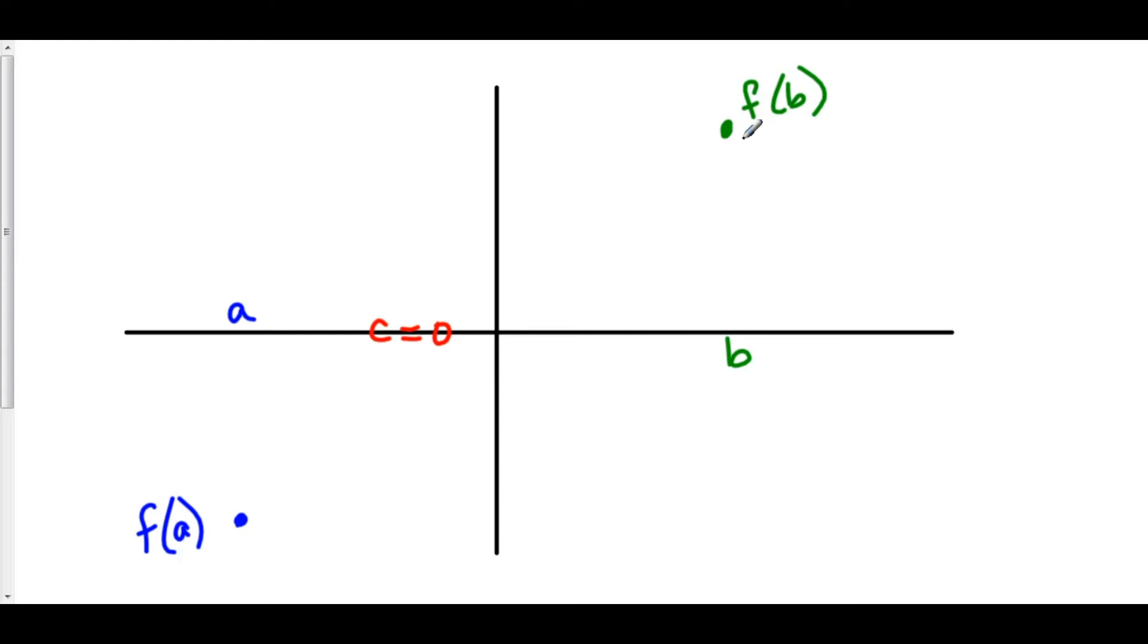You learned this when you were five years old, and you did connect the dots. If you create any continuous function from a to b, it has to go through every single function value from f of a to f of b.